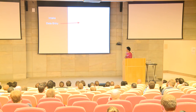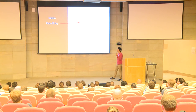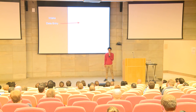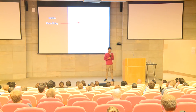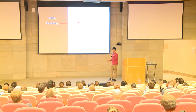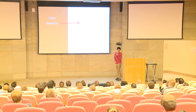Next we move on to data entry, which happens in two steps. One person takes the paper and enters the votes into the system. That goes to a completely separate person in a different room — they look at the paper again, enter the votes again, and we have two versions of the data in our system.